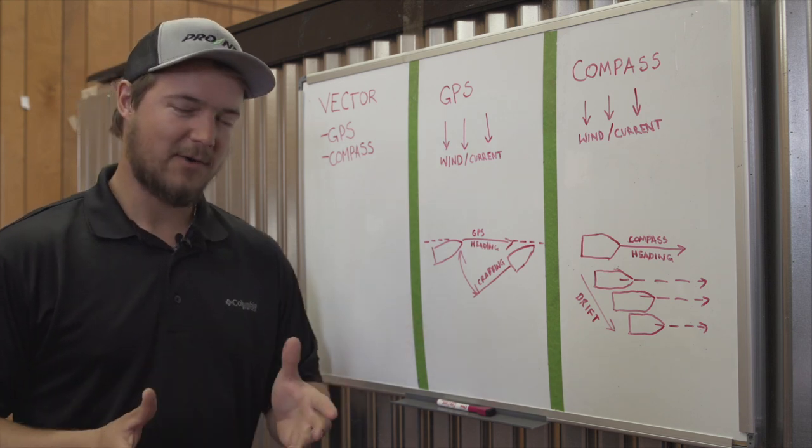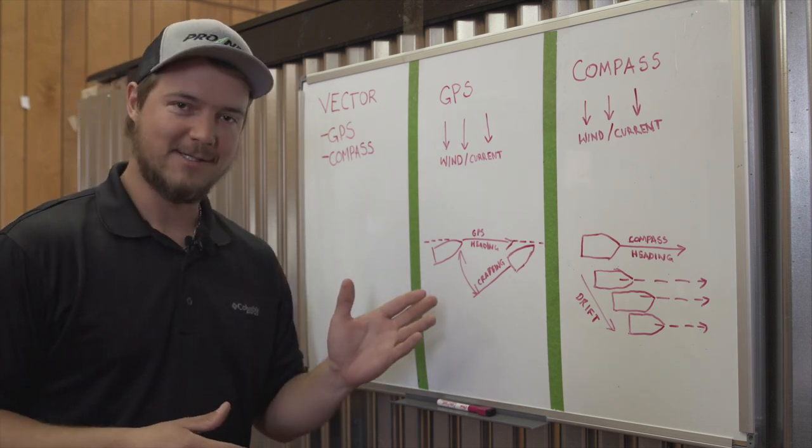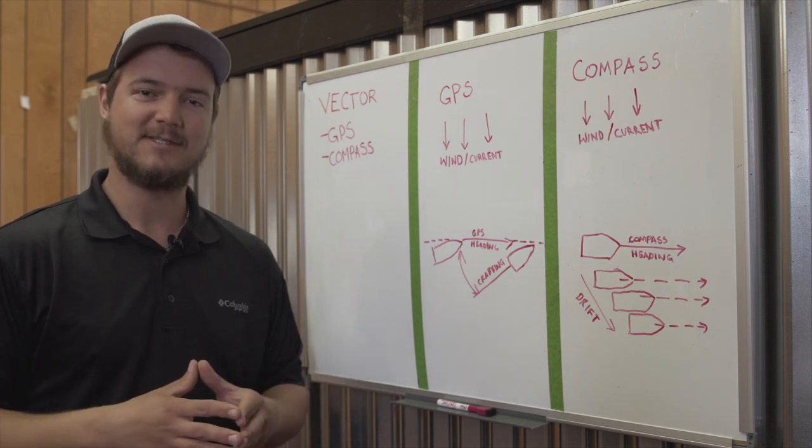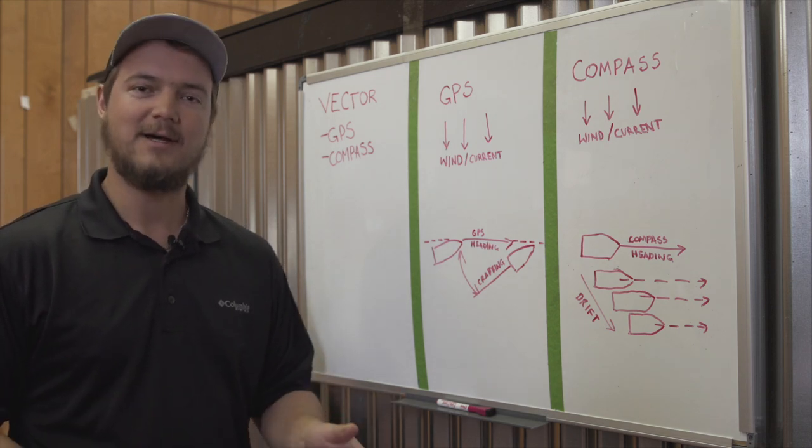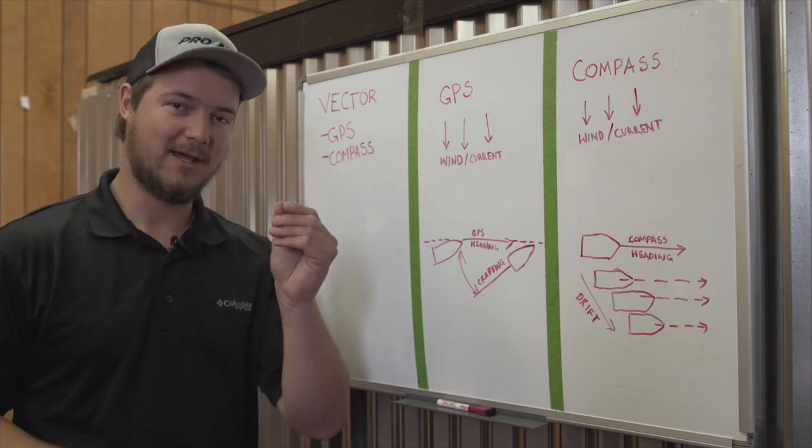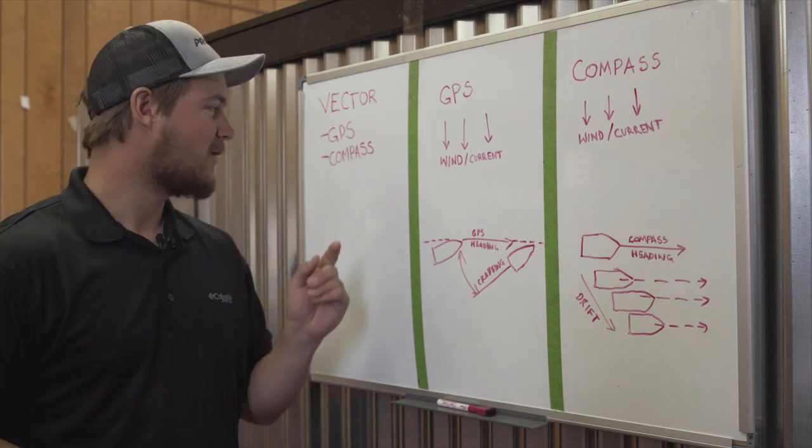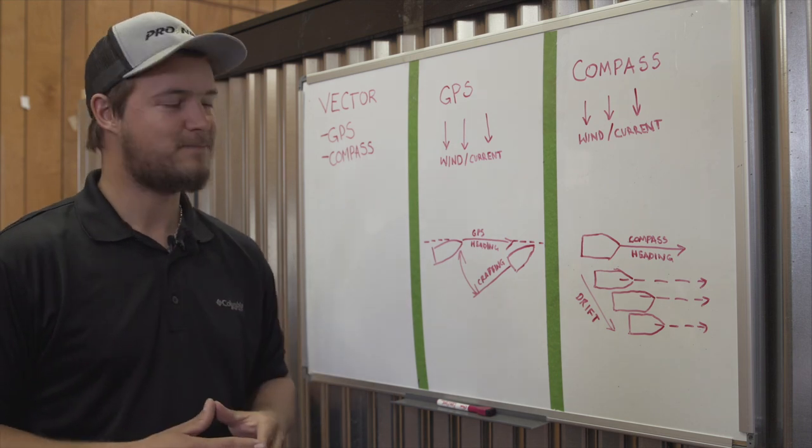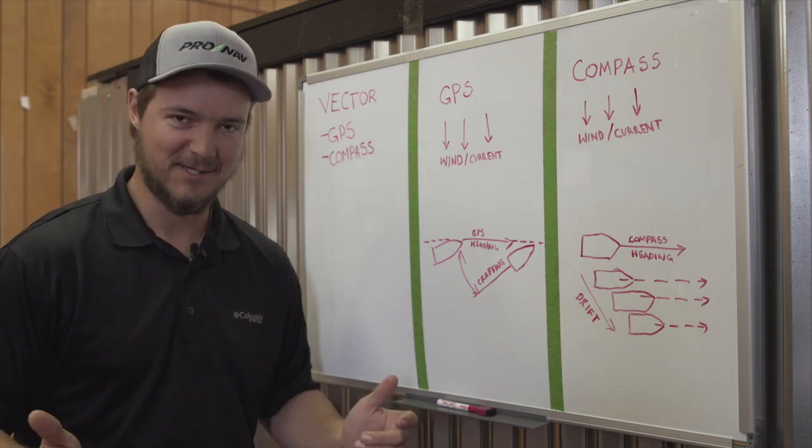With our product, the ProNav Angler, where this applies is on the Vector mode. Vector is essentially a heading lock mode on the ProNav Angler that allows you to either control your boat using a GPS heading lock or a compass heading lock. Let's dive in and take a look at what the differences are.